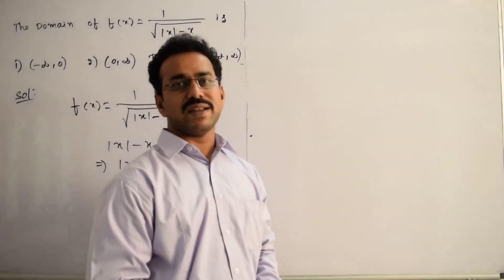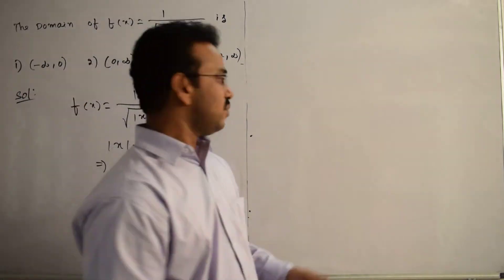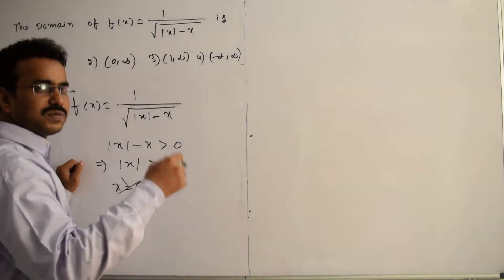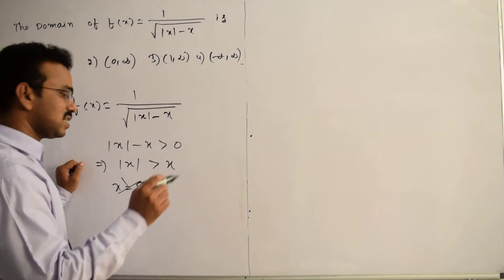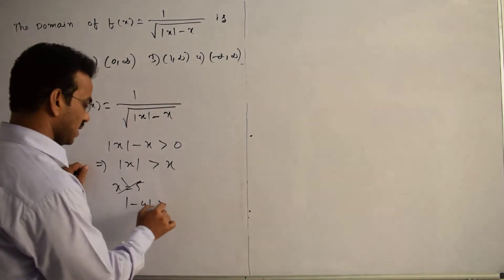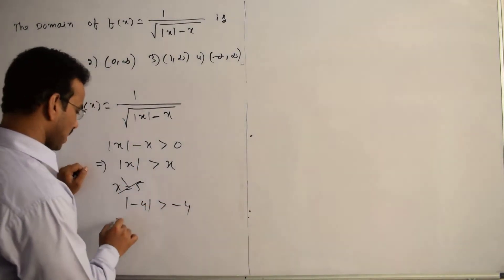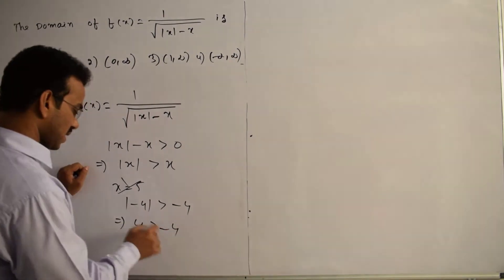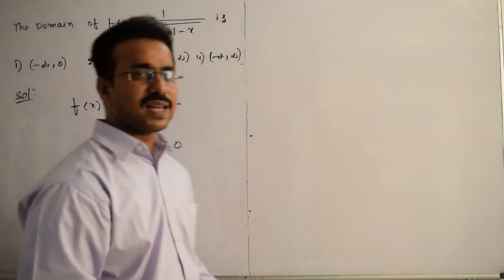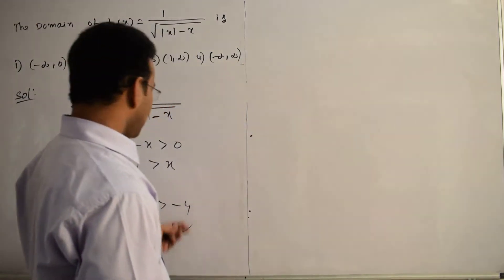Now suppose we take negative real numbers, such as x = -2, -3, or -4. For x = -4, |(-4)| > -4 means 4 > -4, which is true. Clearly the inequality is satisfied for all negative real numbers.